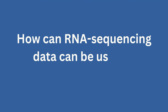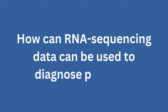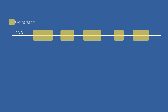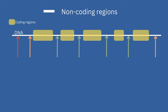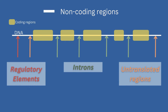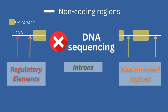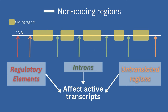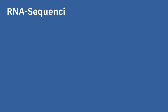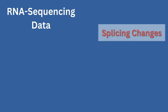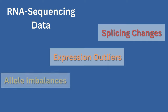The RNA sequencing analysis pipeline can produce a lot of clinically useful data. The biggest benefit of RNA sequencing is the assessment of the non-coding regions of the genome, as they are often not sequenced or hard to interpret with DNA sequencing data. RNA sequencing can show how disease-causing variants would directly affect the active RNA transcripts in a sample. RNA sequencing data can be used to explore splicing changes, expression outliers, and allele imbalances.